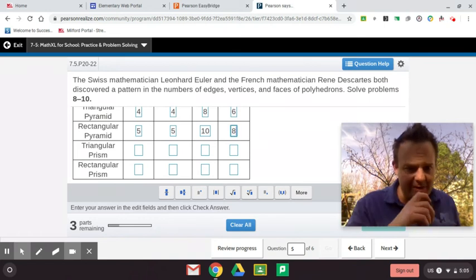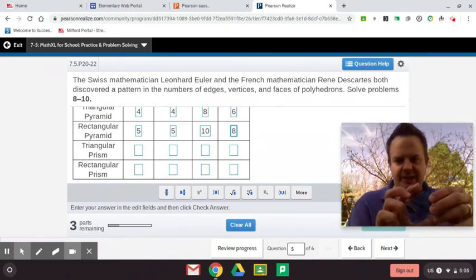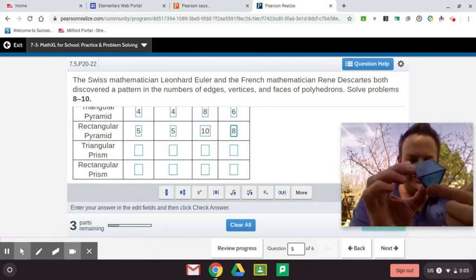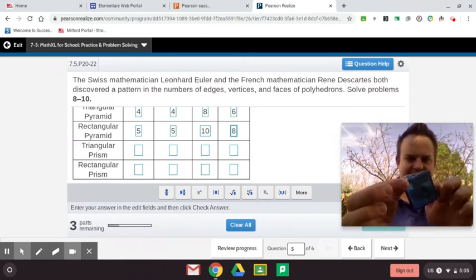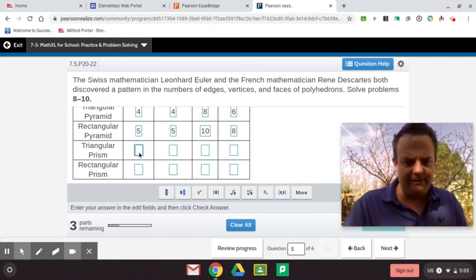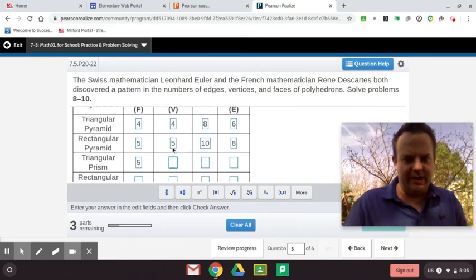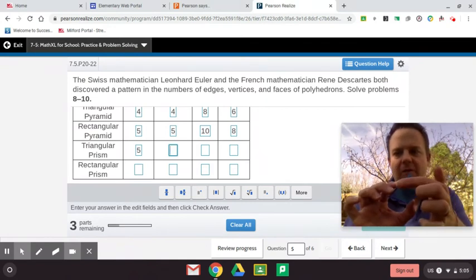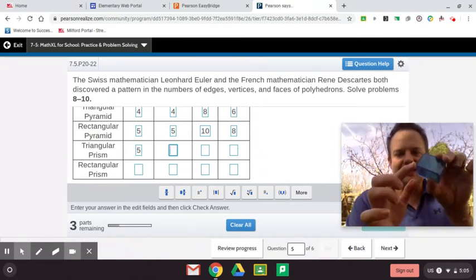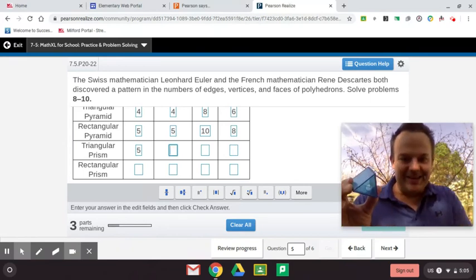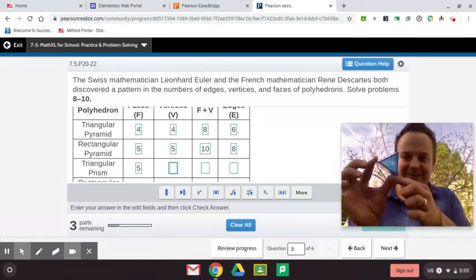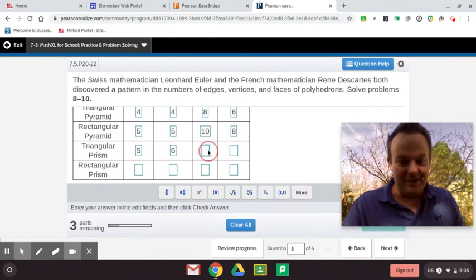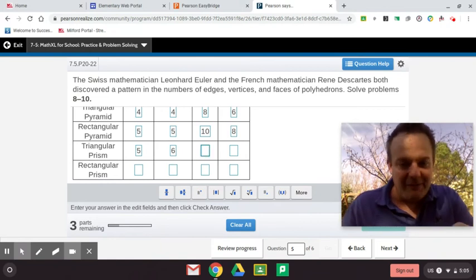A triangular prism, a triangular prism right here. Let's count the number of faces. So we have one, two, those are the two bases and then three lateral faces. So that's five faces. And now the vertices. One, two, three, four, five, six. There are six. I don't know why we got confused there. Five plus six is 11.